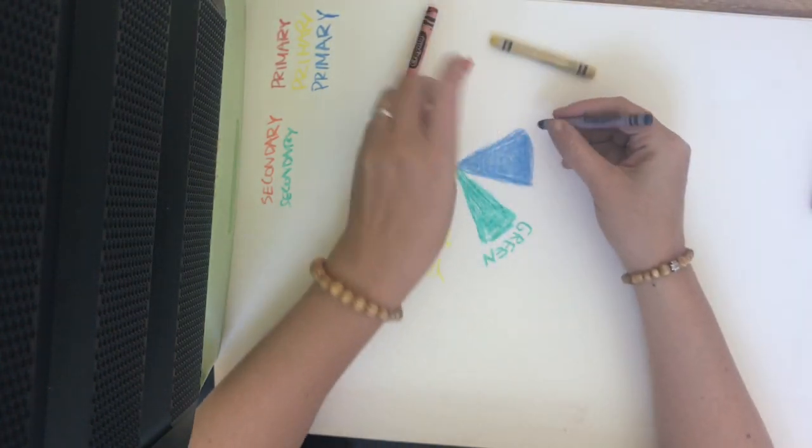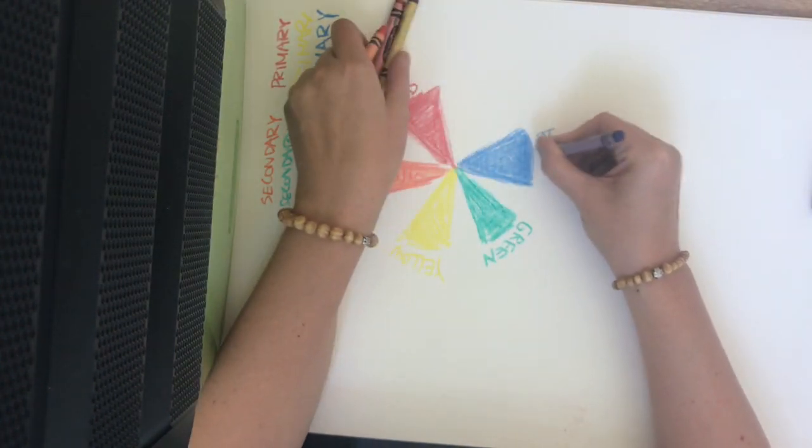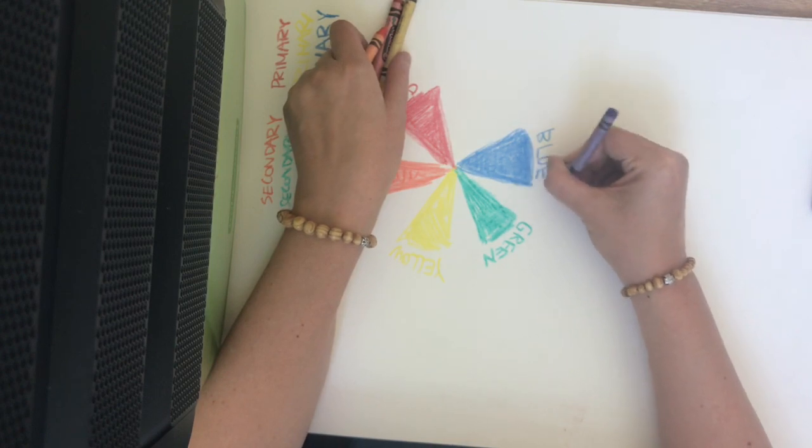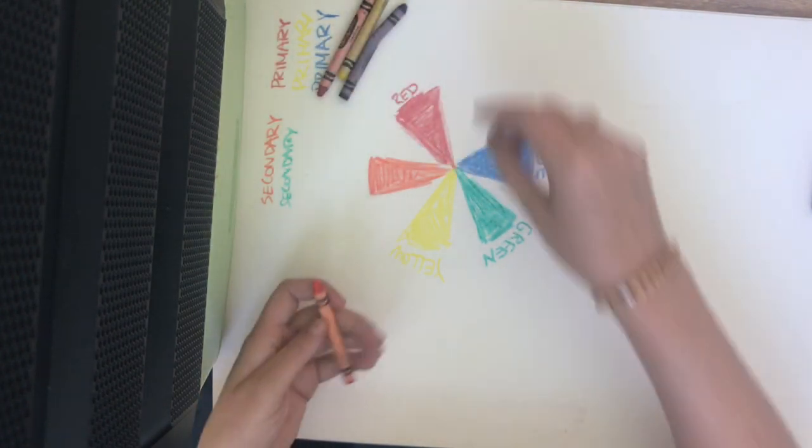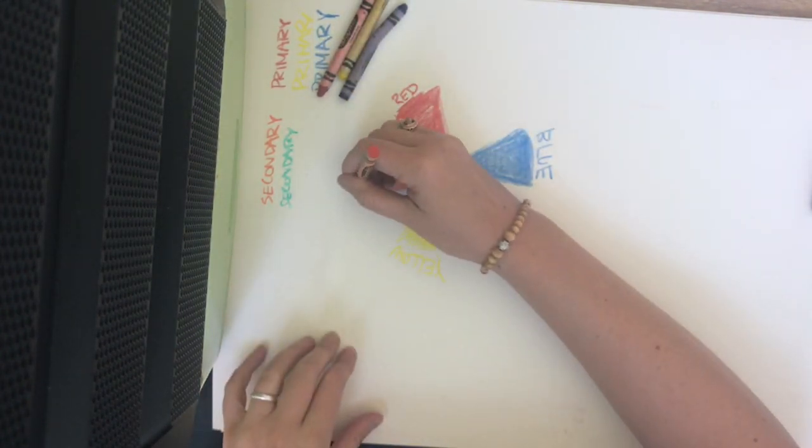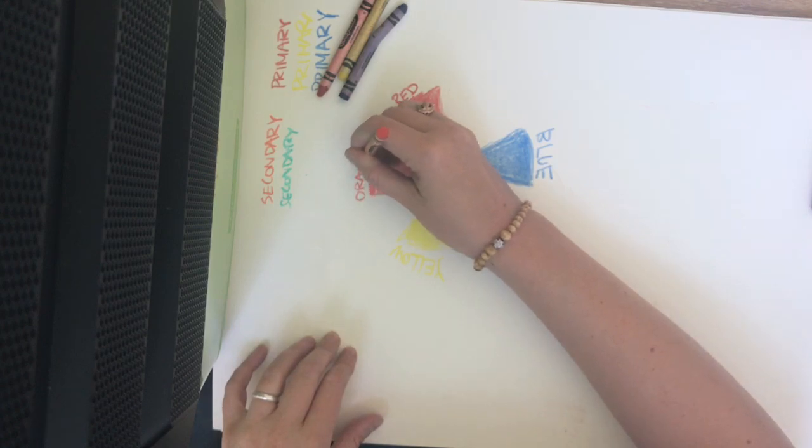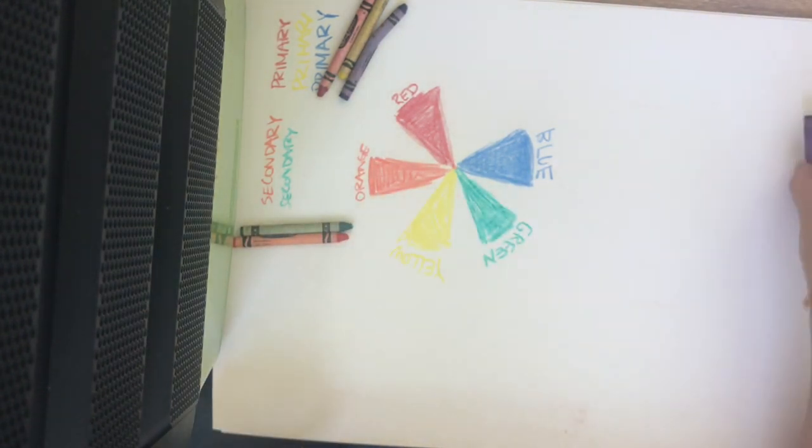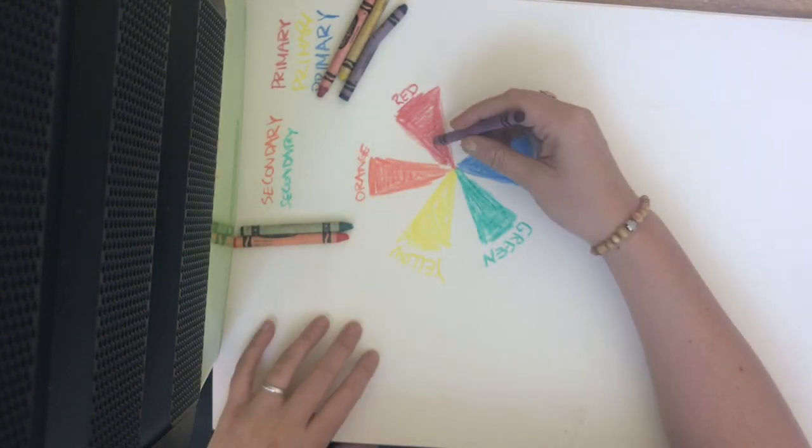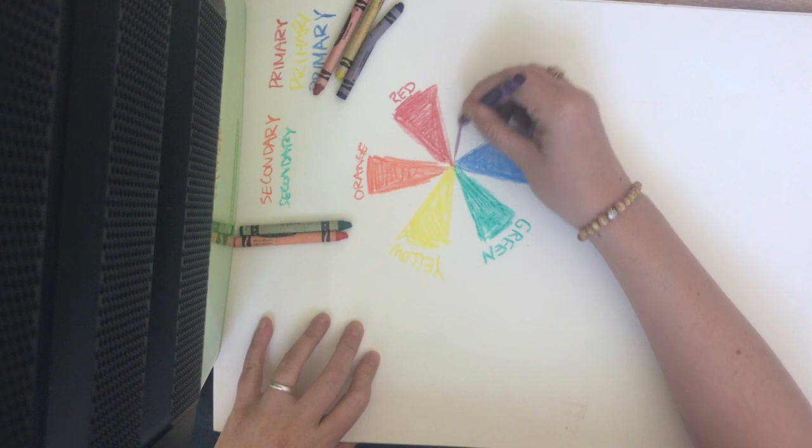I'll take blue and write blue. There we go. And orange and write orange. We've got one more secondary color. If you can guess what color it is, better on you. Our third secondary color is purple.